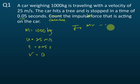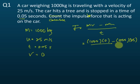...equals mv minus mu over t. M is 1000, v is zero, u is 25, and then divided by 0.05. So what's the answer?